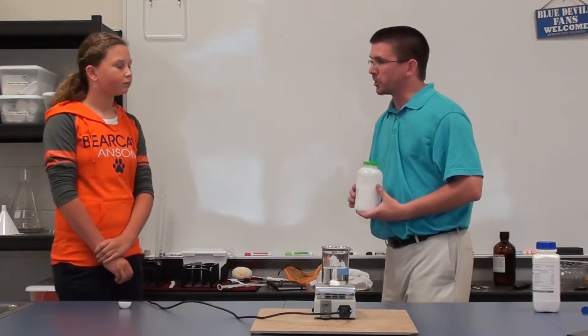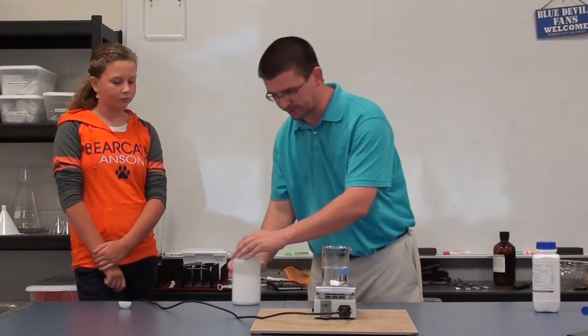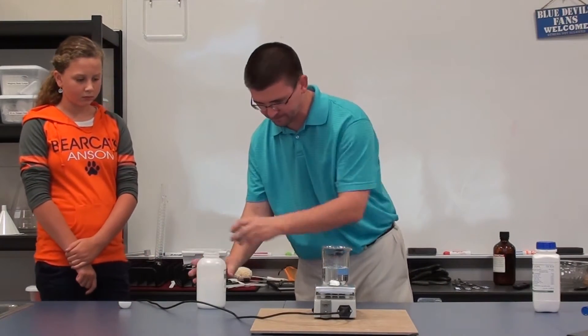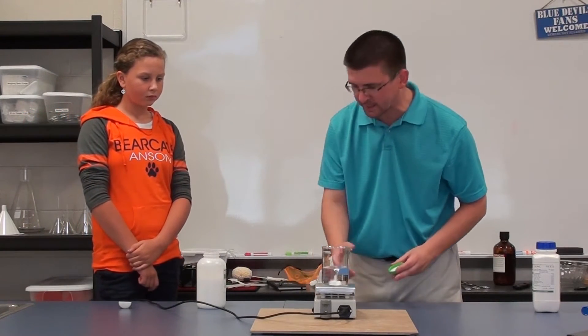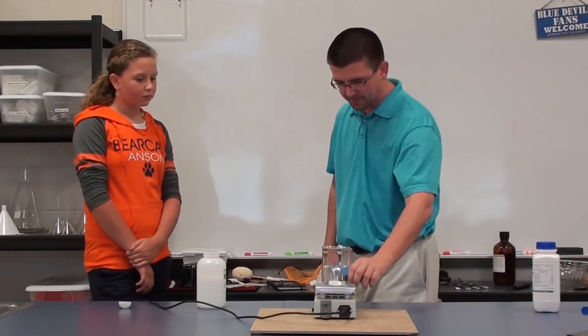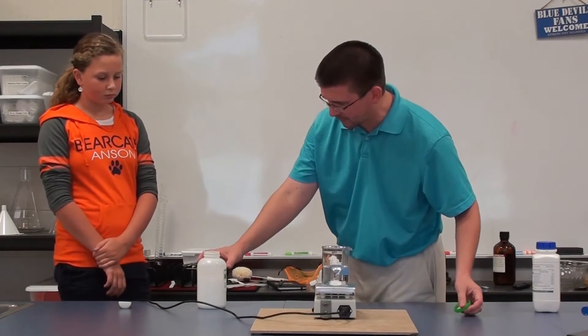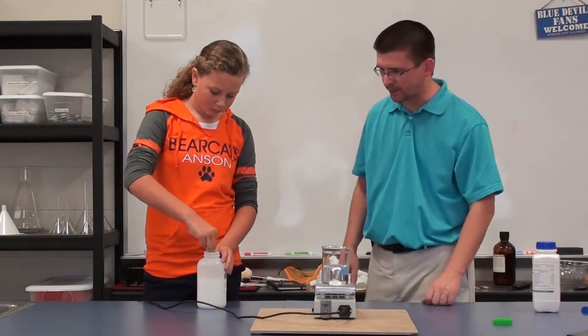All right, so in order to make our solution of sodium acetate, Cameron, what we're going to do, here's the chemical, the sodium acetate, and I'm going to let you make the solution. So we're going to use our stirrer and our hot plate here to help us out. We want to heat this water up so it will be able to dissolve more of the sodium acetate. And I'm just going to let you slowly add some in one scoop at a time, add a scoop, let it dissolve, and then we'll add another scoop.